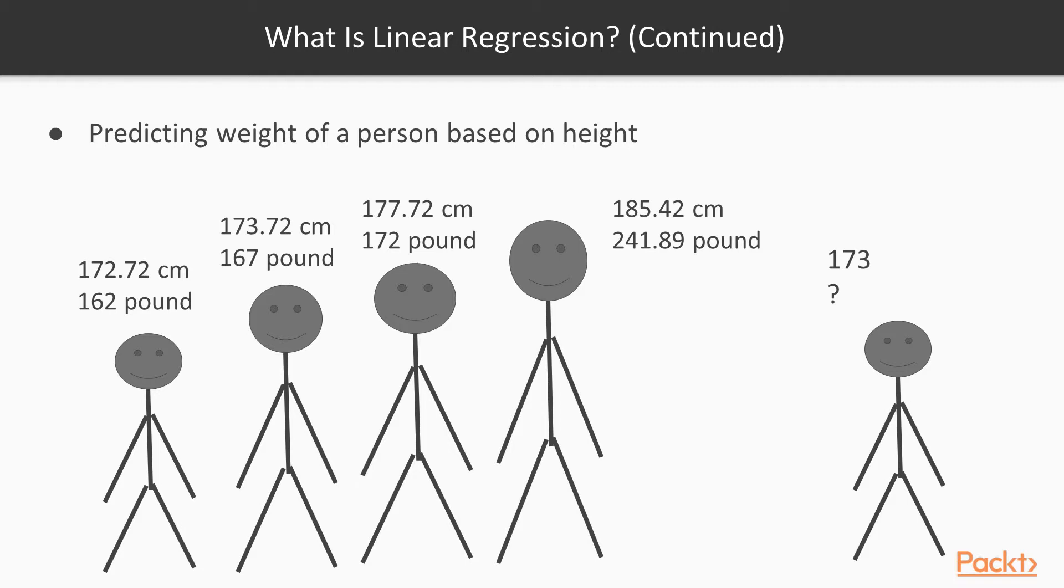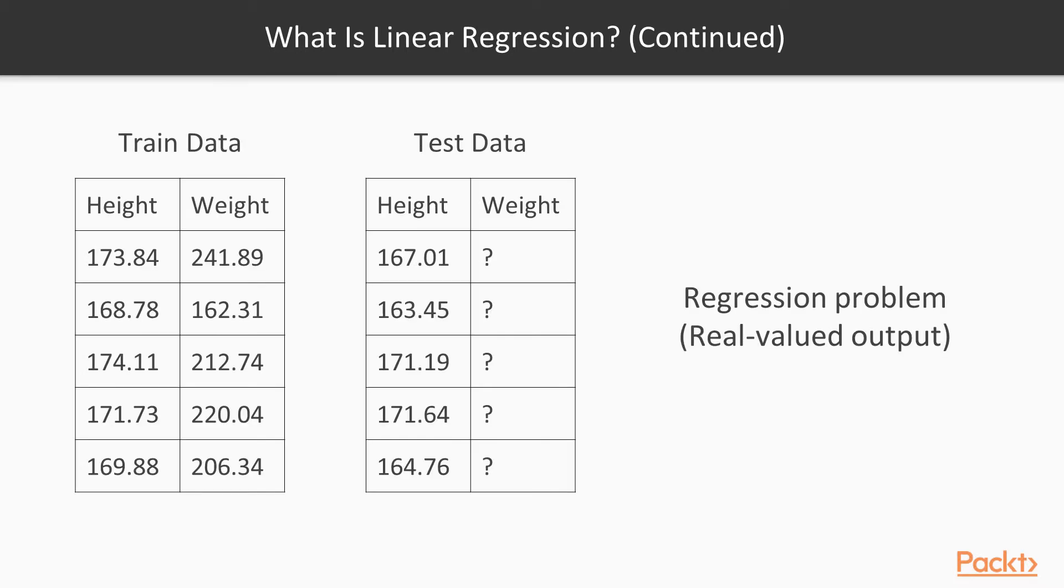Now if there is a new person introduced and you want to predict this person's weight, you can assume that his weight will be somewhere close to 174. The first dataset which has the weight values is called the training dataset. We'll use this to train our model, and then pass it the test dataset in which we have the individual heights but not the weights, and make predictions for the weights.